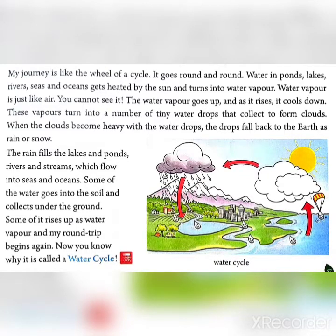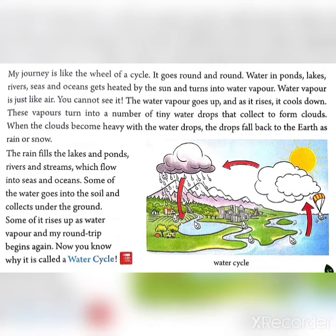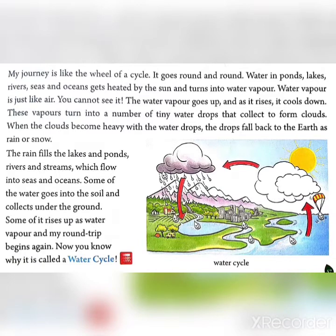Some of the water goes into the soil and collects under the ground. Some of it rises up as water vapour and my round trip begins again. Now you know why it is called a water cycle — because the process of water keeps going round and round continuously.